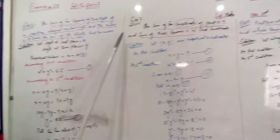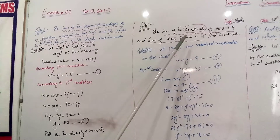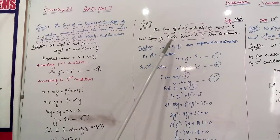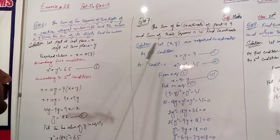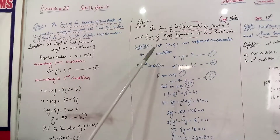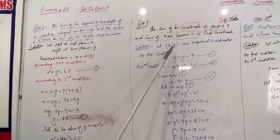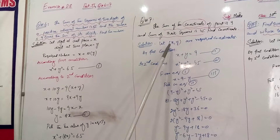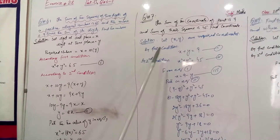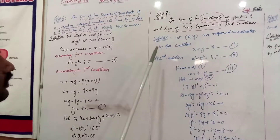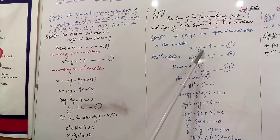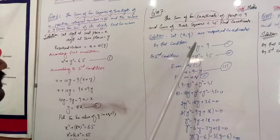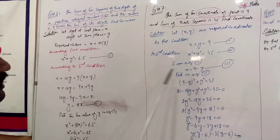Question number 7: the sum of the coordinates of a point is 9, and the sum of the squares is 45. Find the coordinates. According to the first condition, x plus y is equal to 9. According to the second condition, the sum of the squares is 45.